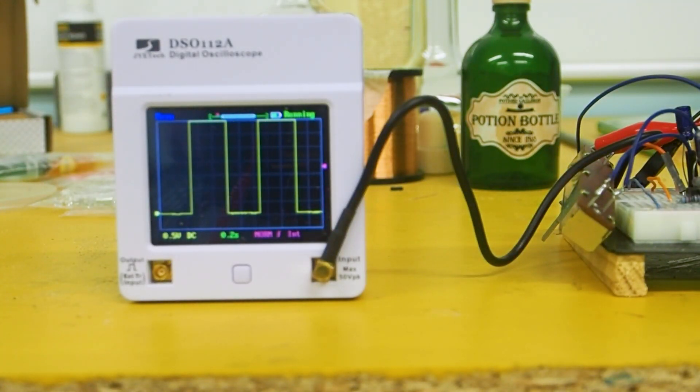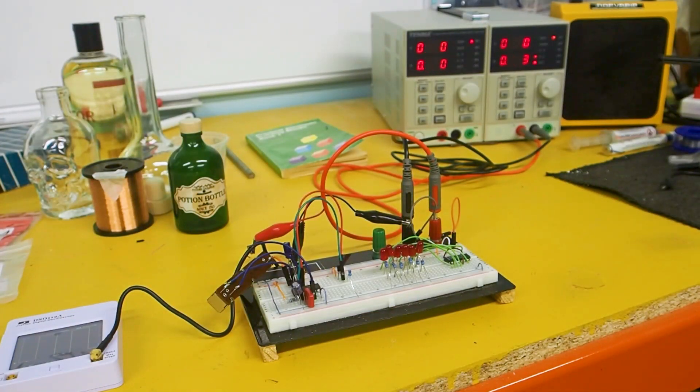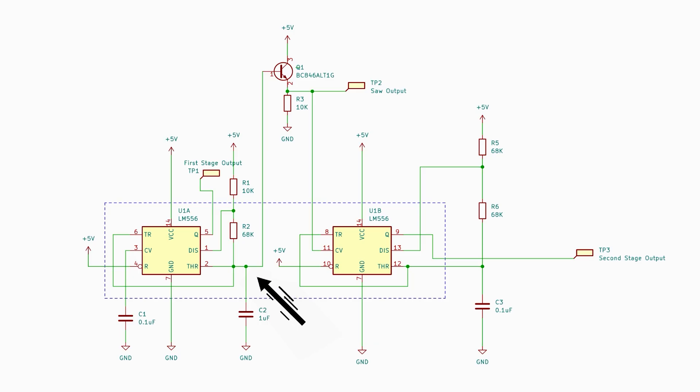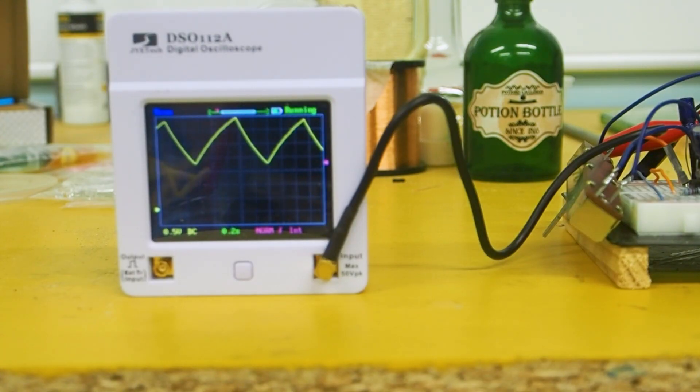But we're not interested in that square wave. We're more interested in the signal from the threshold pin. So that's connected via the transistor. So if we have a look at that, you can see that we've got a charging and discharging curve.